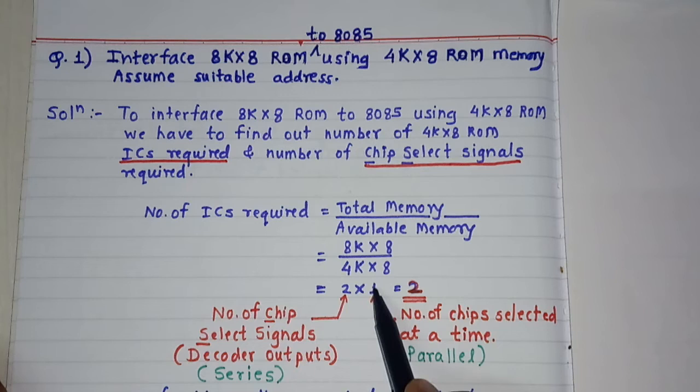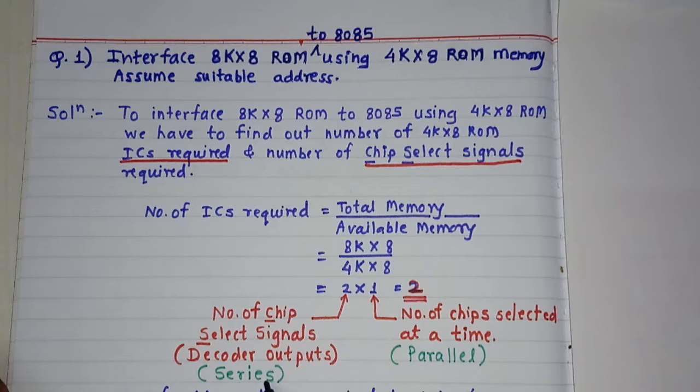That number is represented by the number written after the cross sign. In short I can say: series cross parallel. Series means one after another memories will be selected, and parallel means at a time how many memories will be selected. So that is what I am saying here — parallel means 1 chip at a time.